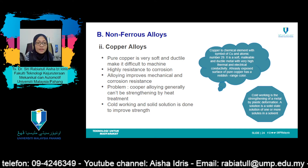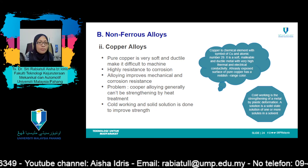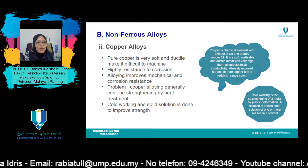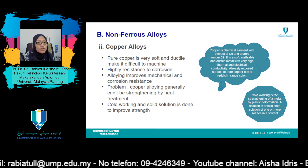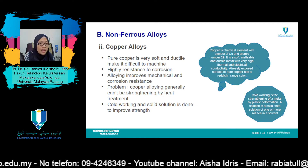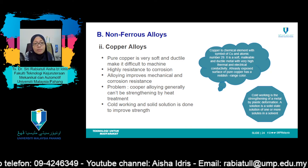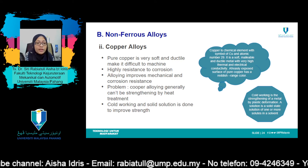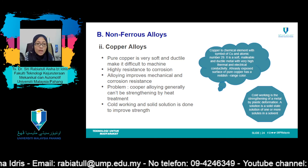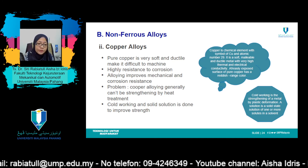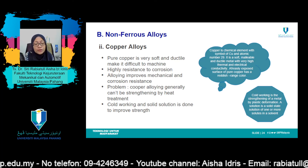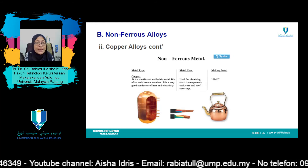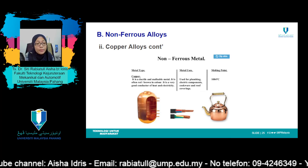Copper and copper-based alloys possessing a desirable combination of physical properties have been utilized in quite a variety of applications since antiquity. Unalloyed copper is soft and ductile and difficult to machine; it also has an almost unlimited capacity to be cold worked. Furthermore, it is highly resistant to corrosion in diverse environments including the ambient atmosphere, sea water, and some industrial chemicals. The mechanical and corrosion-resistant properties of copper may be improved by alloying. Most copper alloys cannot be hardened or strengthened by heat treating; consequently cold work and solid solution alloying must be utilized to improve mechanical properties.